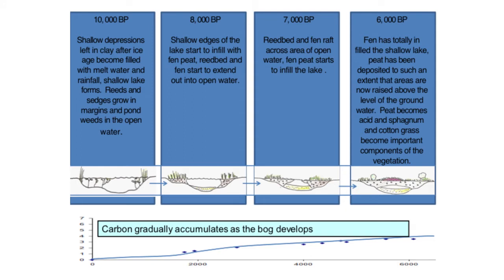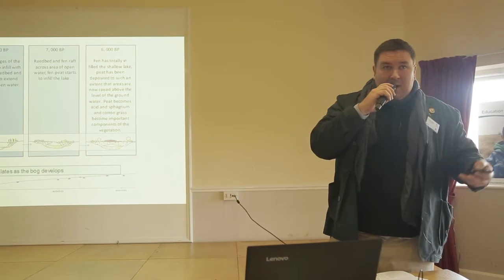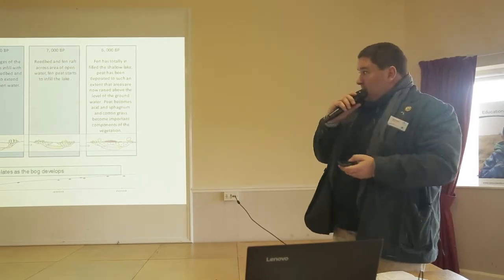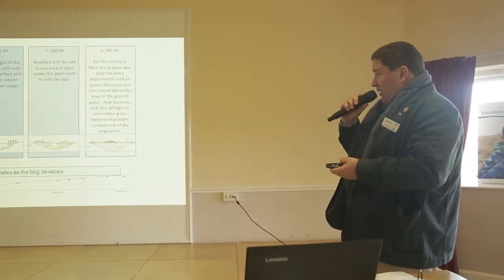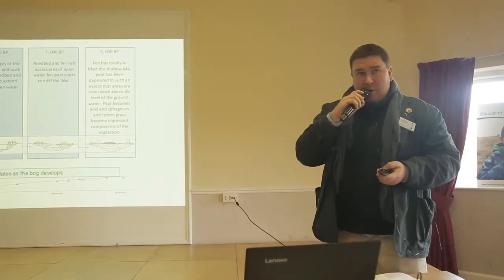If you go back long enough and follow that peat core down to the bottom, you start off with an open water system. As these sites develop, there's a little graph showing the accumulation of carbon over time. Thinking about the carbon landscape and why these sites are important — not just for their biodiversity — they are massive stores of carbon. As the peat builds up within these basins, the amount of carbon stored in them increases. You start off with a lake and then you end up with a fen, and then if it rains enough, the peat keeps growing above the local groundwater.